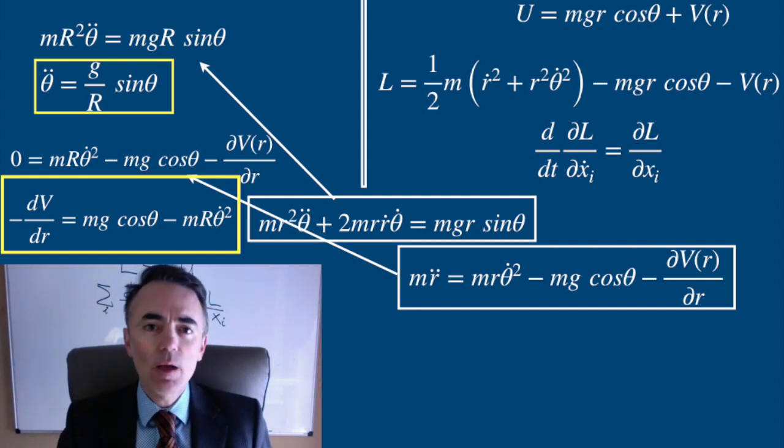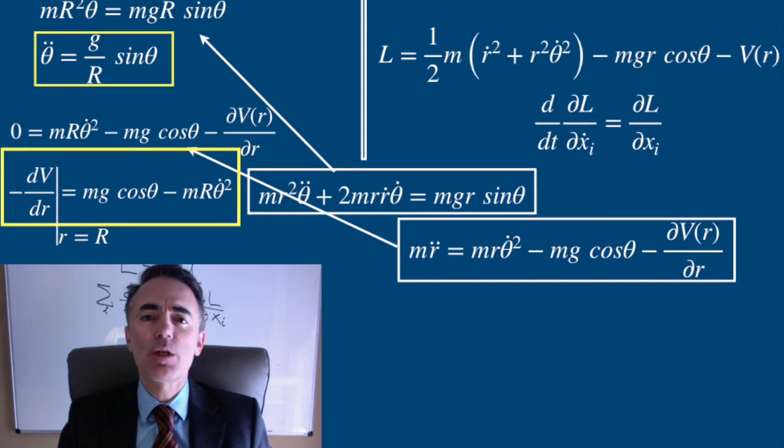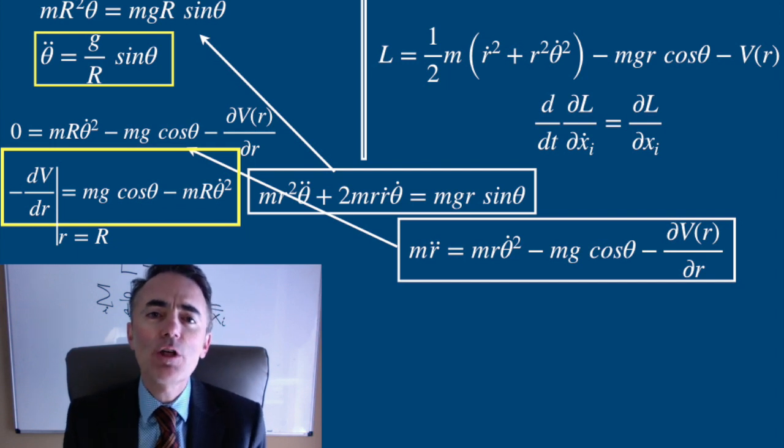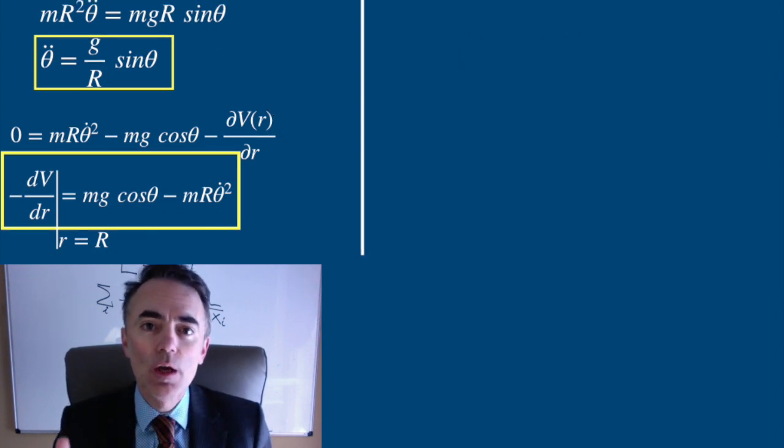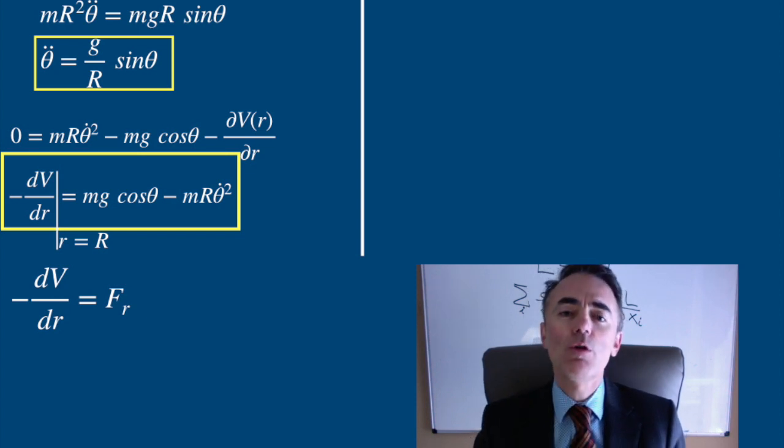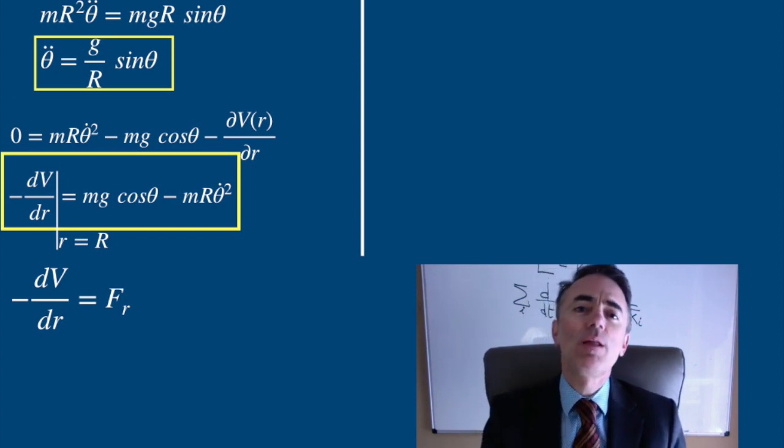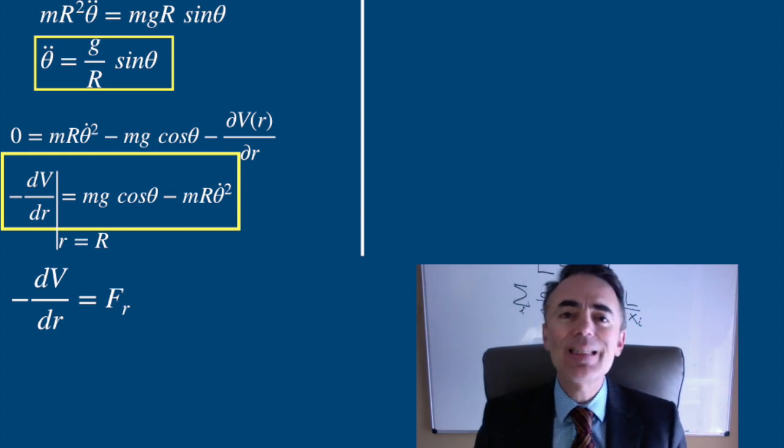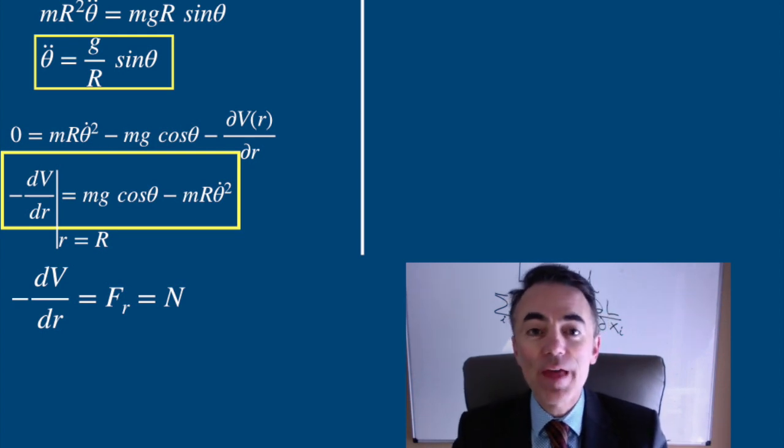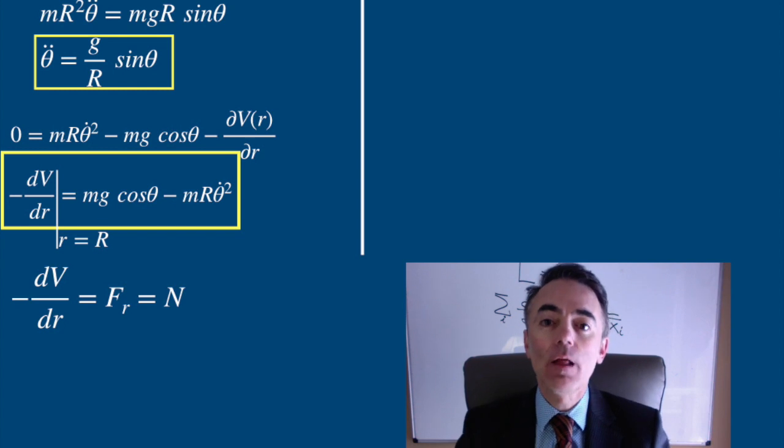And the second equation tells that the negative derivative of the potential with respect to r evaluated at the radius capital R is m g cosine of theta minus m r theta dot squared. Well, the derivative of a potential is a force. So the derivative of this potential is the constraint force I was looking for. Because the potential is derived with respect to the radial direction, it is the constraint force applied in the radial direction. So this has to be the normal force. And it happens to coincide with m equal m a in the radial direction.